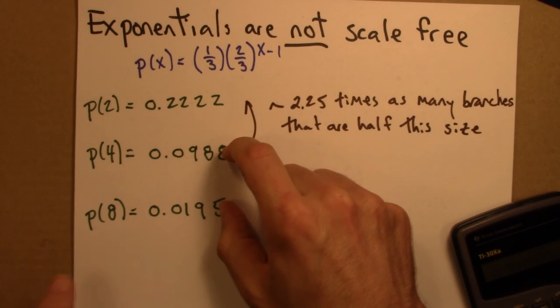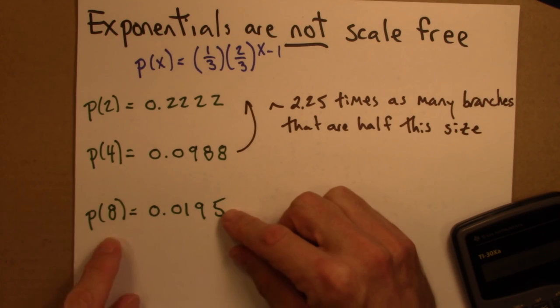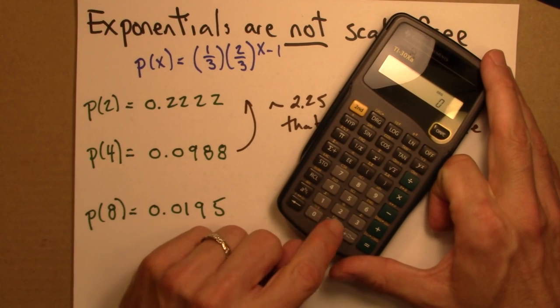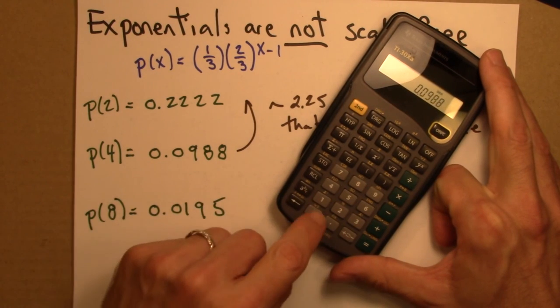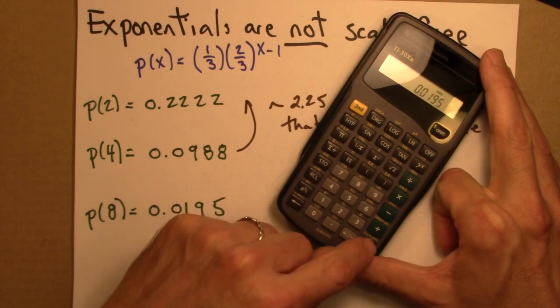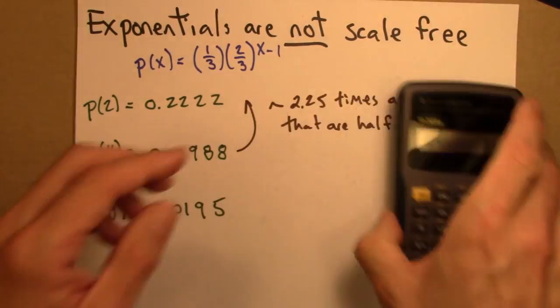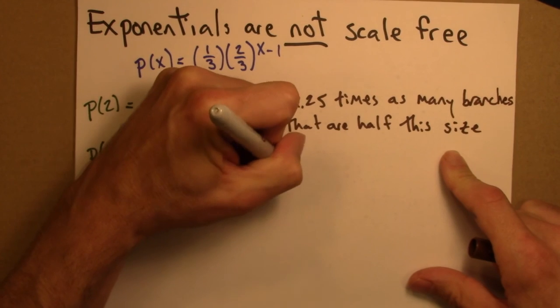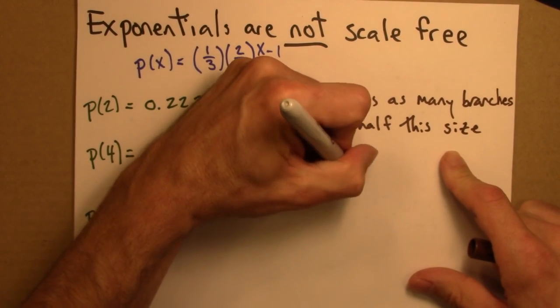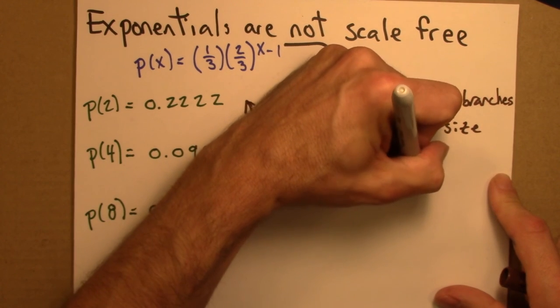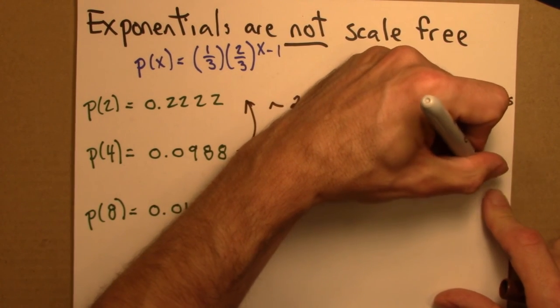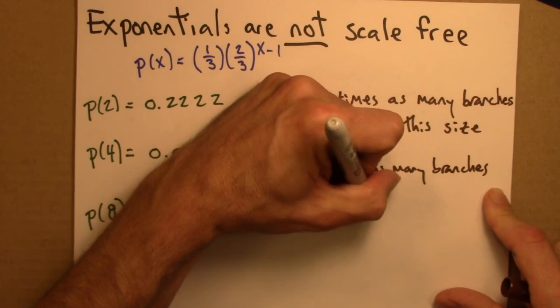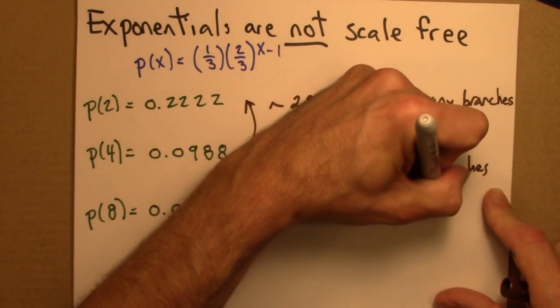Alright, what about here? What about if I'm thinking about branches of length 8, and I want to know, how much more likely are branches of length 4? So let's divide, let's take the ratio, 0.0988 divided by 0.0195, and 5.07. So that means they're around 5.07 times as many branches that are half this size.